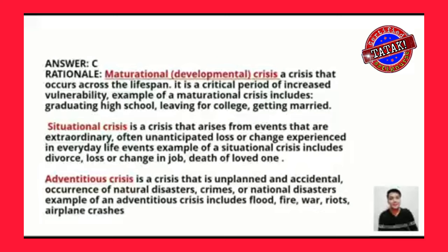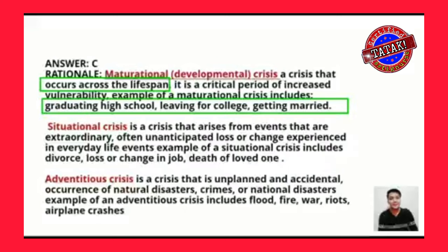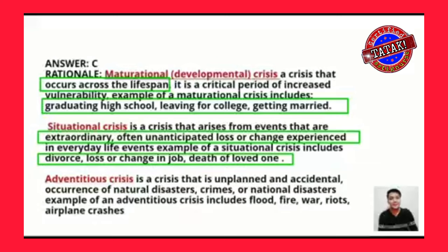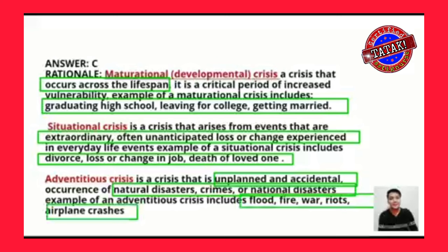Take note: we have three types of crisis. First, maturational crisis — also called developmental crisis — is a crisis that occurs across the lifespan, a critical period of increased vulnerability. Examples include graduating high school, leaving for college, and getting married. Situational crisis arises from extraordinary, unanticipated loss or change in everyday life, like divorce, loss or change in job, and death of loved ones. Adventitious crisis is unplanned and accidental — examples include natural disasters, crimes, national disasters, flood, fire, war, riots, and airplane crashes. The correct answer is letter C: marriage is an example of a maturational crisis.